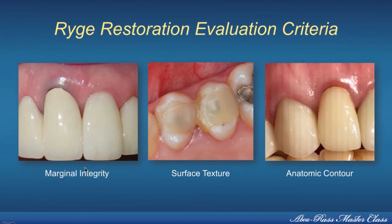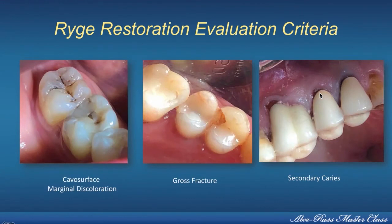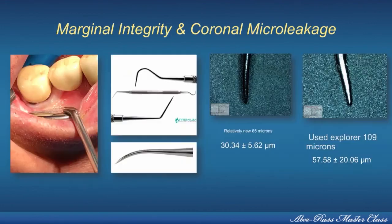The last area we cover in Unit 1 is the restorative diagnostic tests — the Ryge restoration evaluation criteria, the marginal integrity, the surface texture, and the quality of the restorations, the anatomy contour and the effect of contour on the tissue, the marginal discoloration of the restorations, the fractures, and the secondary caries formations. We focus on marginal integrity and coronal micro-leakage, an extremely important area in restorative, pulpal, and endodontic diagnostics.